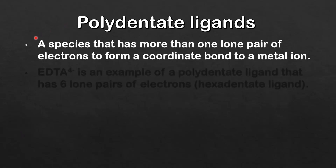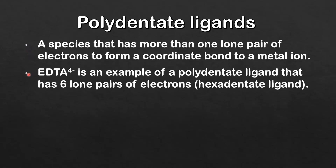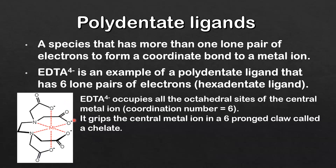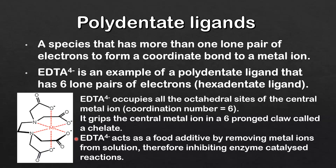Next we'll look at polydentate ligands. A polydentate ligand is a species that has more than one lone pair of electrons to form a coordinate bond to a metal ion. The EDTA4- ion is an example of a polydentate ligand that has six lone pairs of electrons, so it's classified as a hexadentate ligand. Here you can see a complex ion with a central metal ion surrounded by the EDTA4- ion — it occupies all the octahedral sites, giving a coordination number of six. It grips the central metal ion in a six-pronged claw called a chelate.